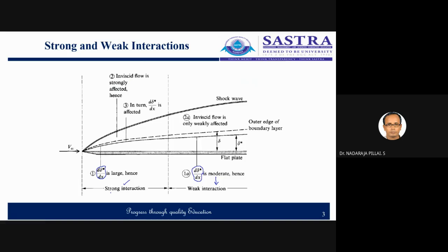The similarity parameter χ̄ (chi bar) is otherwise known as the induced pressure increment. We had a discussion that if χ̄ is greater than 3, we have a weak interaction. So far we did not have anything on the shock and the boundary layer interaction.